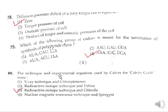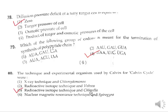Question 80: The technique and experimental organism used by Calvin for the Calvin cycle were radioactive isotope technique and the organism was Chlorella. So the correct answer is option 3.